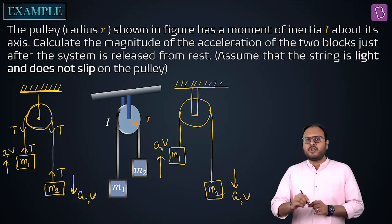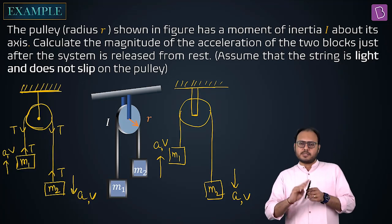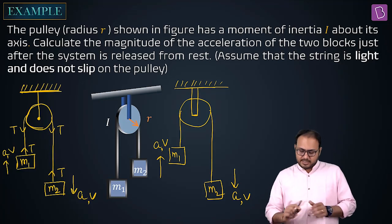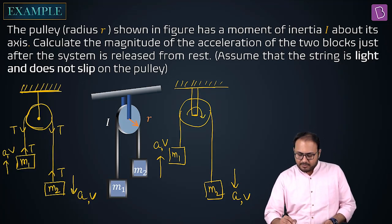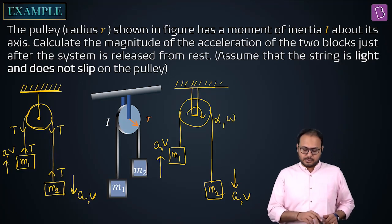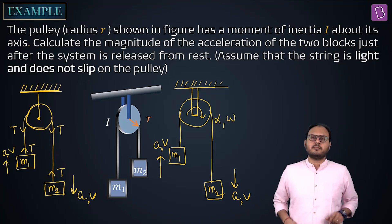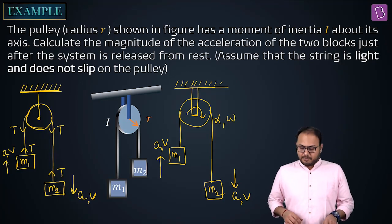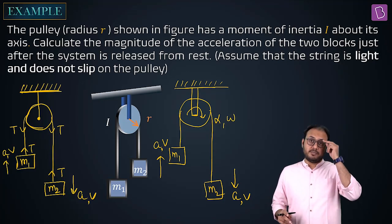The string does not slip on the pulley means the pulley rotates. If the pulley rotates, there will be an alpha or omega of the pulley also. Take your time — the biggest difference I still haven't put yet, but I want you to digest this first.